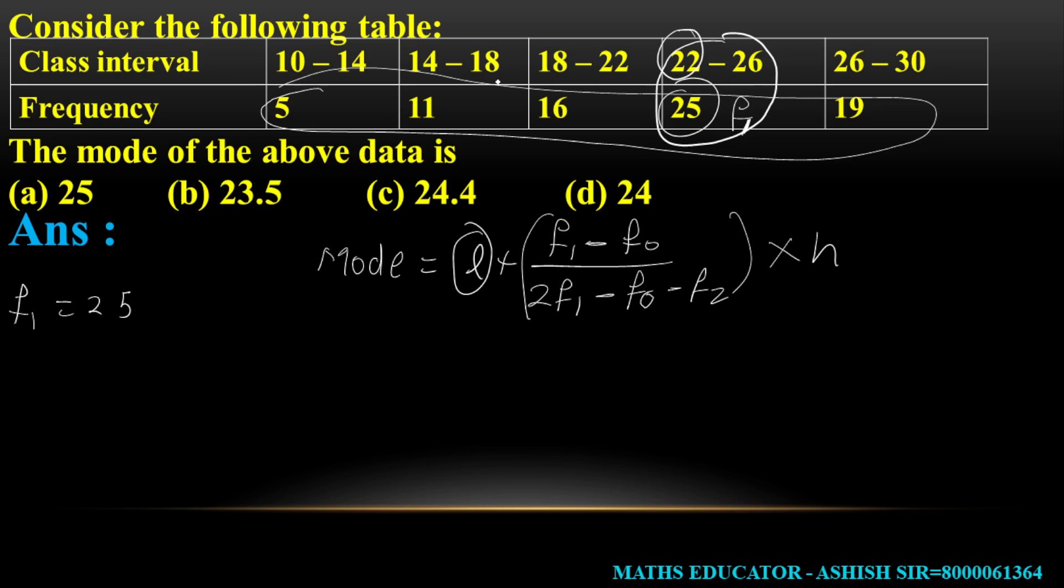F1 is the frequency of the modal class. F0 is the previous class frequency, which is 16. F2 is the next class frequency, which is 19. H is the upper limit minus lower limit, so 26 minus 22 equals 4.